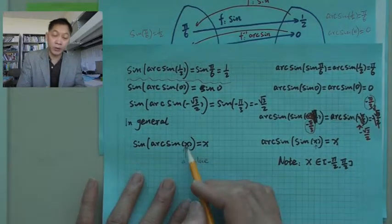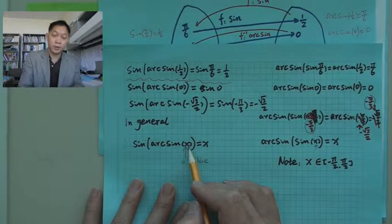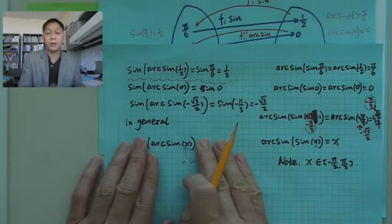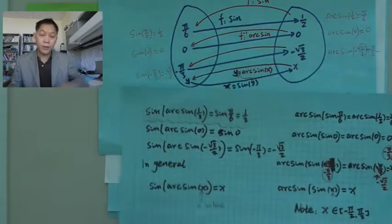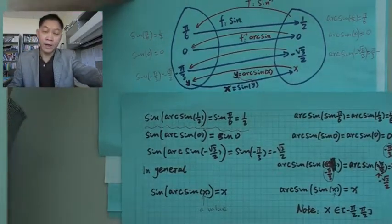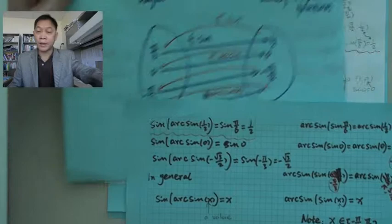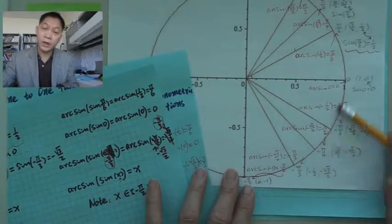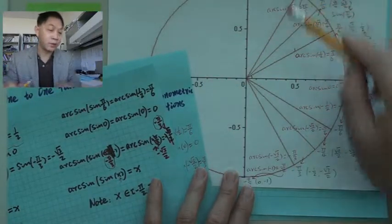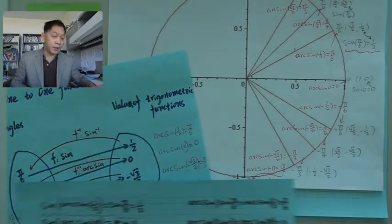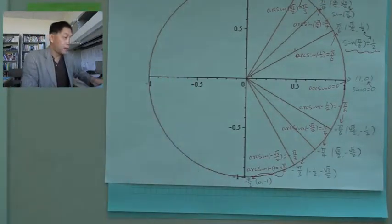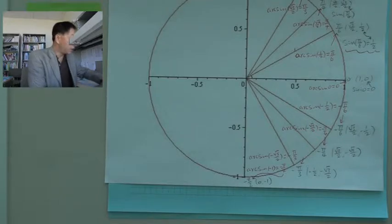You cannot put 2 in arc sine — if you put 2 there, it's not defined. So far, we are clear about all those values, the arc sine domain and range. Now we need to consider the graph.